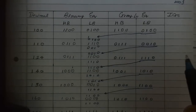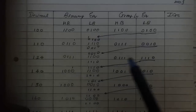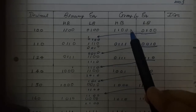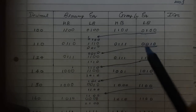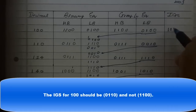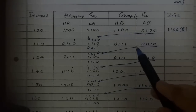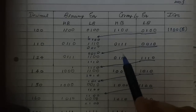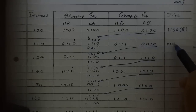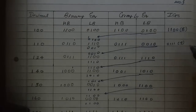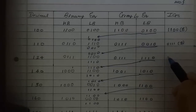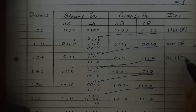To get the IGS code from the gray level equivalent, we copy the highest four bits of the gray level equivalent. For decimal 100, the IGS code is 0110 in binary, whose decimal equivalent is 6. For 110, the IGS code is 0111 in binary, with decimal equivalent 7. For 124, the higher four bits of the gray level equivalent are also 0111, giving an IGS binary equivalent of 7.